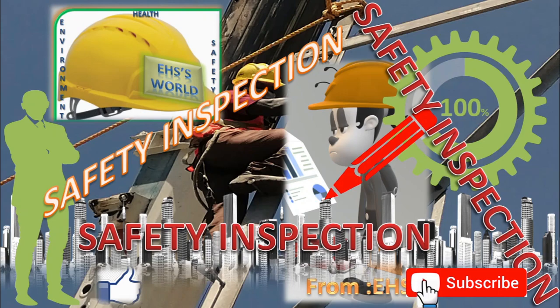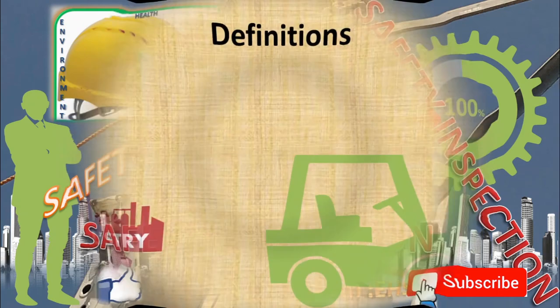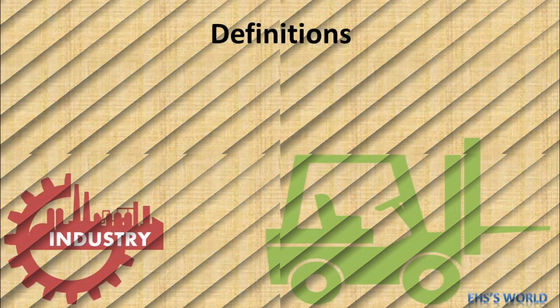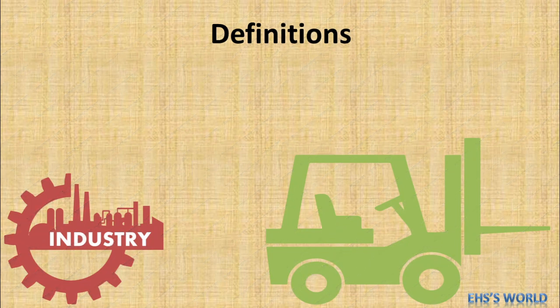A safety inspection is a formalized and properly documented process of identifying hazards in the workplace. Safety inspection involves a checklist which helps to assess each area or potential hazards at the workplace.